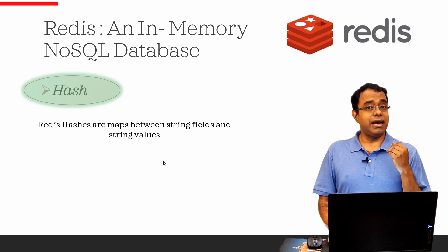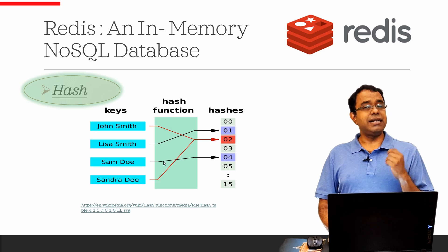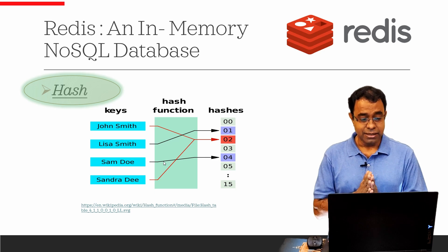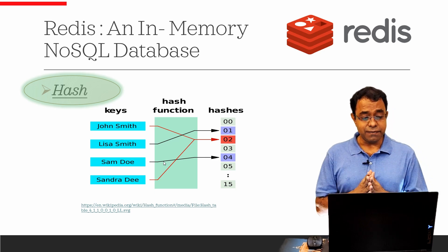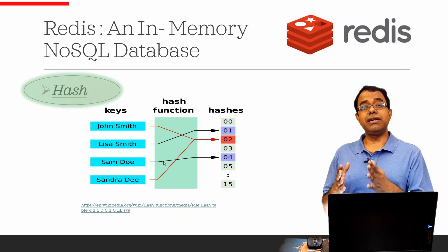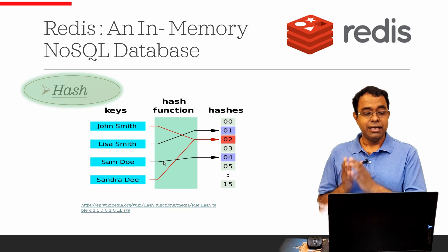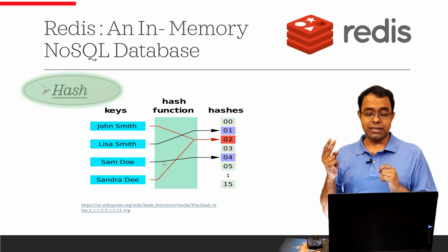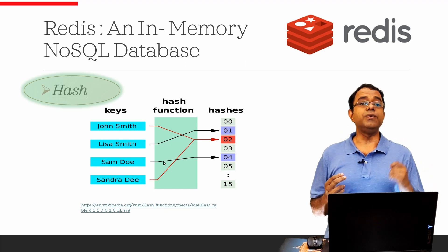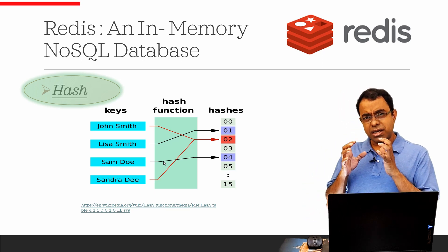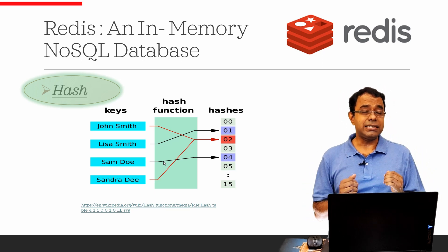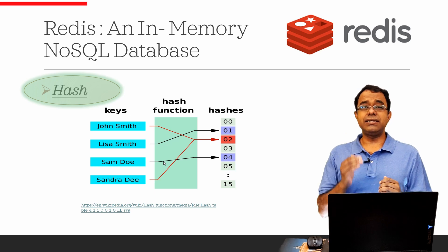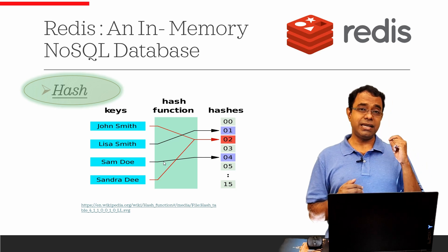Now before we further explore hash, let's understand the meaning of hashing. This picture from Wikipedia defines hash: hashing can be considered as a mathematical function where you combine things to generate a hash. In this case, a name generates a two-digit hash when it passes through a hash function. Hashes are used inside Redis's own implementation, so you can think of a Redis hash as a small Redis implementation in itself.